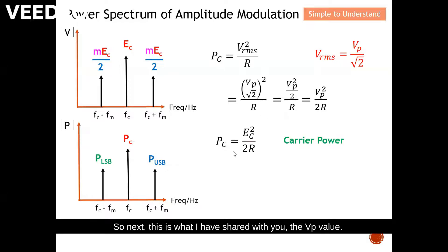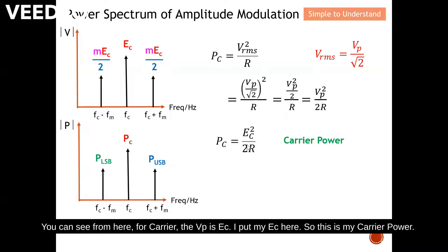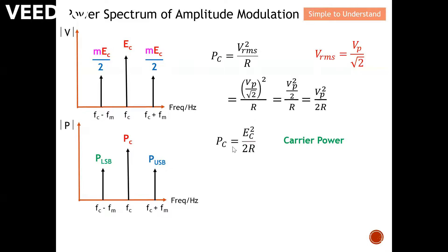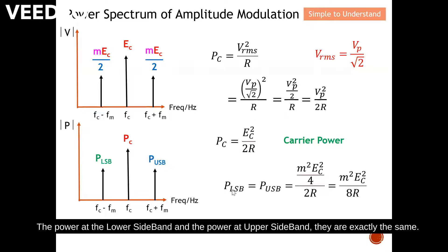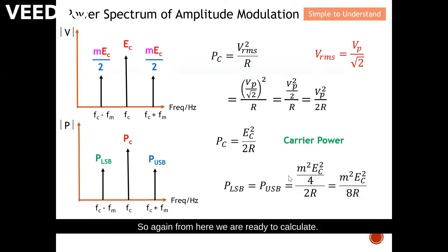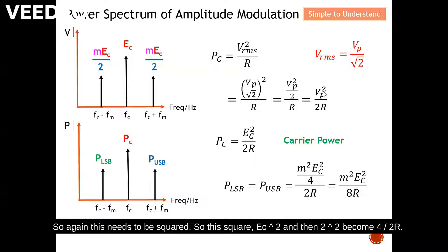For the carrier, the Vp value is Ec, so the carrier power is Ec² / 2R. For the lower sideband and upper sideband, the Vp is mEc / 2. Squaring this term gives us m²Ec² / 4, and dividing by 2R gives m²Ec² / 8R. So the power of each sideband is m²Ec² / 8R.